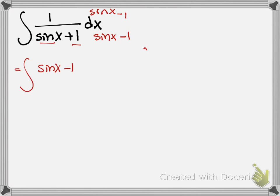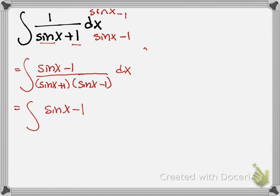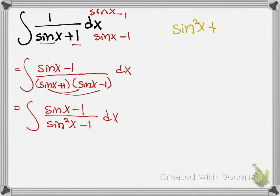Multiplying by sine of x minus 1 on top and bottom: on top I have sine of x minus 1, and on the bottom I have (sine x + 1)(sine x − 1), which distributes to sine squared of x minus 1. Now I'll use another trig identity — sine squared plus cosine squared equals 1 — so sine squared minus 1 equals negative cosine squared.